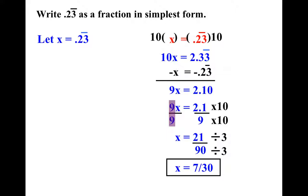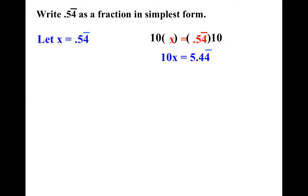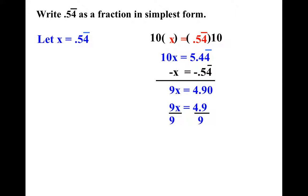Let me show you another one so you can see how it's done. The more you do these, the easier it gets. Trust me. One number being repeated — multiply by 10. Two numbers being repeated — multiply by 100. Three numbers being repeated — 1,000 — and so on. So when you subtract out, you get a nice number.